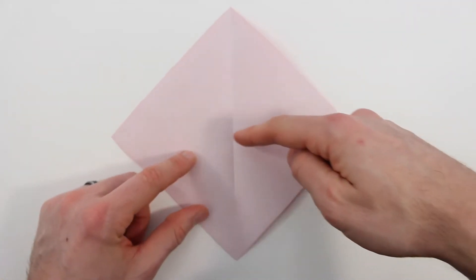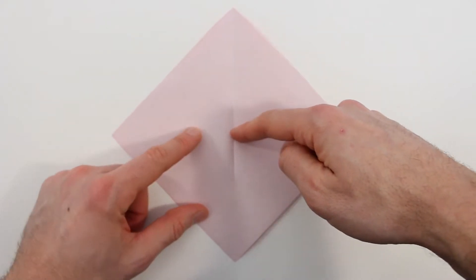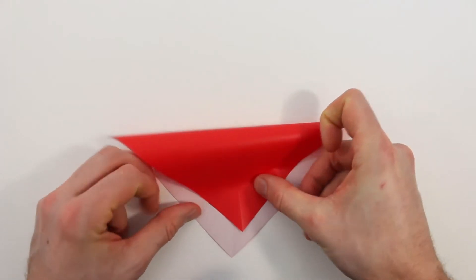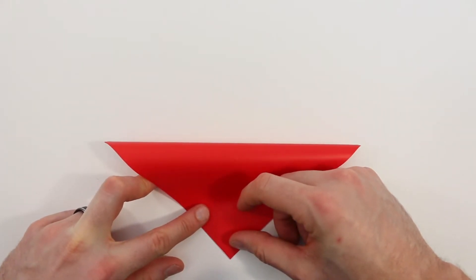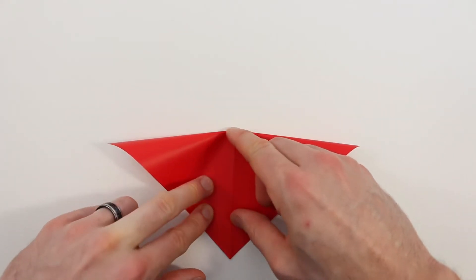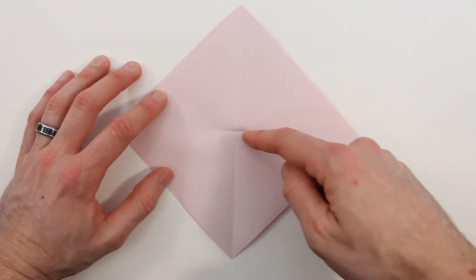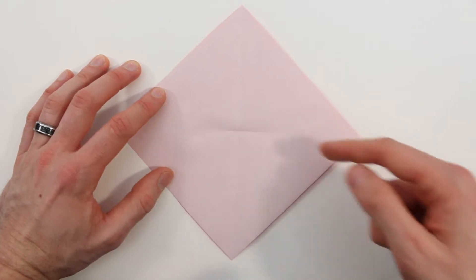Next we're going to make a small pinch mark right in the center here. So I'm going to bring this top corner down to the bottom corner. And then once you've lined those up, you'll just make a small pinch mark right in the middle, and then unfold. You can see there's a little X right in the center of the paper now.